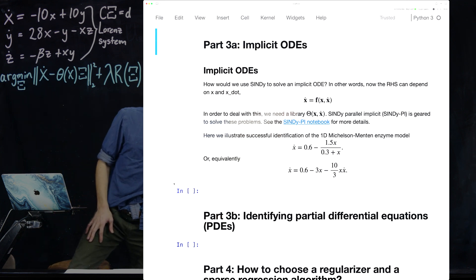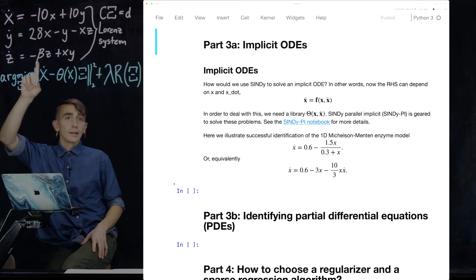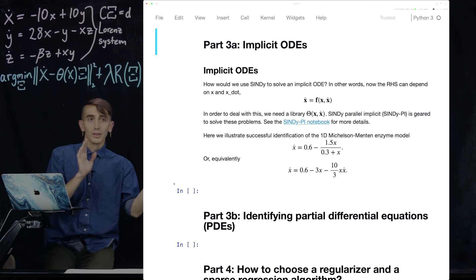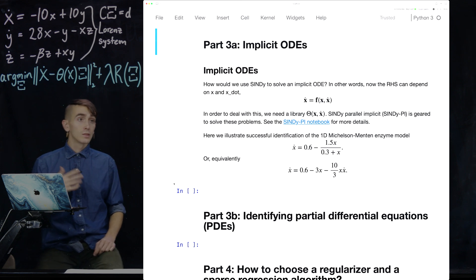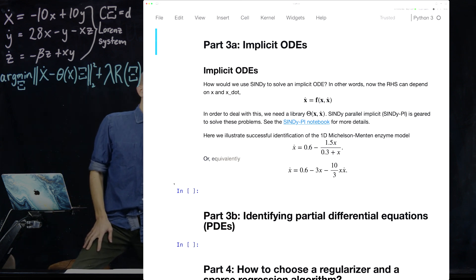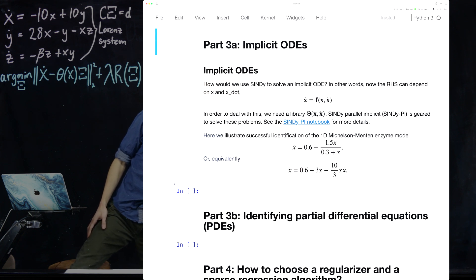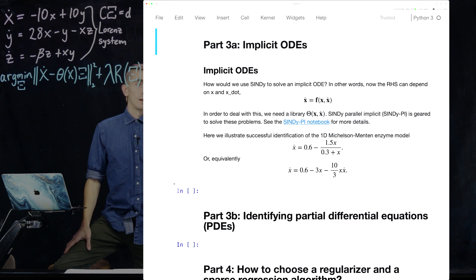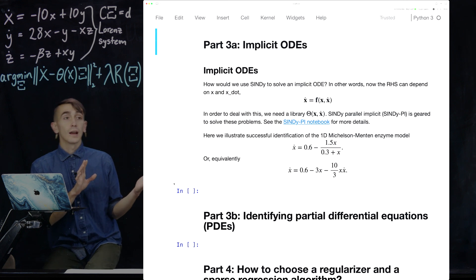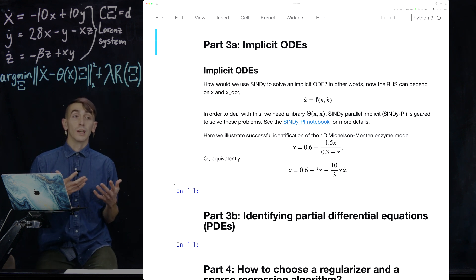An implicit ODE is really quite simple. It's basically that you have a system of ordinary differential equations that depends on both x and x dot. So you can see, like the Lorenz equations above, all the terms on the other side don't depend on x dot, y dot, and z dot. And so this is a normal system of ODEs. But you might have a system like this 1D Mickelson-Menten enzyme model, where you actually have some term in the denominator. And when you rearrange terms, you can actually see, you can write it as x dot equals 0.6 minus 3x minus 10 thirds x x dot. So actually, there are terms on the right-hand side of that equation that actually are proportional to x dot itself. And for these sorts of terms, we need this variant of Cyndi called Cyndi Pi, Cyndi parallel implicit.